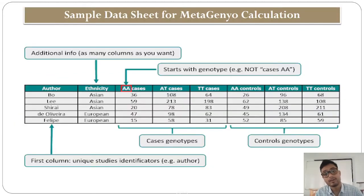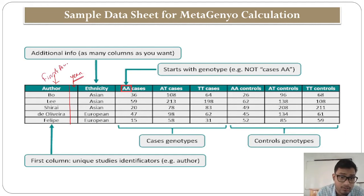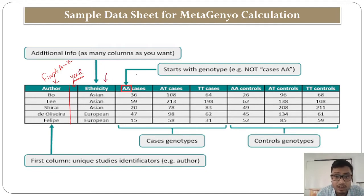Now, what is the sample data sheet and how can we prepare a data sheet for conducting meta-analysis in MetaGenio? We have an Excel sheet where the first column is for the first author name, the second column is for the year of publication, the third column is for ethnicity, and the next six columns are dedicated to your genetic association studies data.